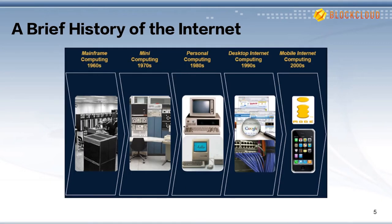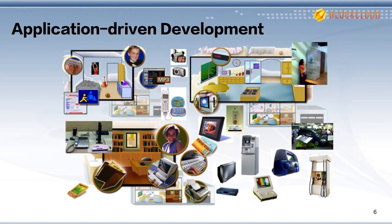For the next 50 years, the Internet has evolved significantly with the development of computing technology, from mainframe computing to personal computing to mobile Internet. Now, it has become a network of globally interconnected computing units. Everyone is using the Internet, and we might not be able to live without it.